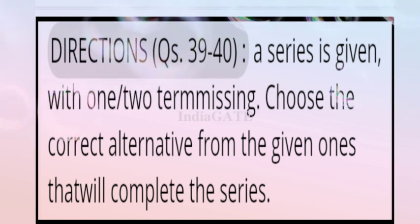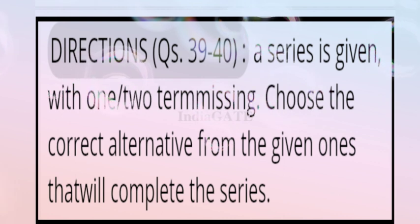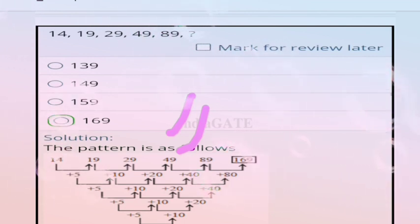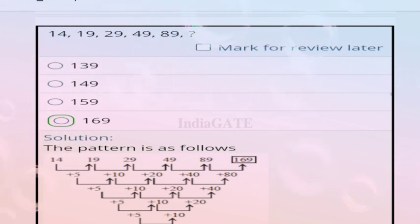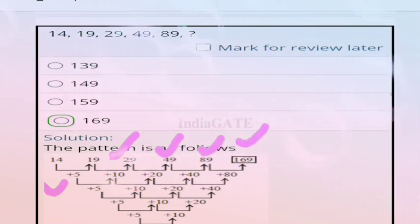Direction for questions 39 and 40: a number series is given with one term missing. For question 39, the series is 14, 19, 29, 49, 89. The pattern: differences are +5, +10, +20, +40, +80. So the correct answer is 169.